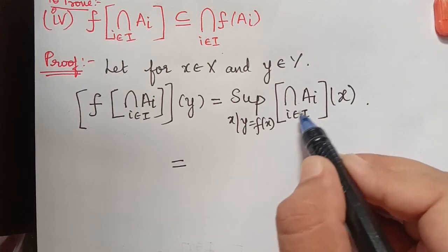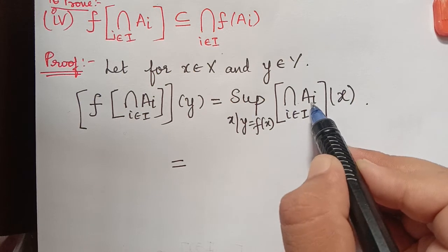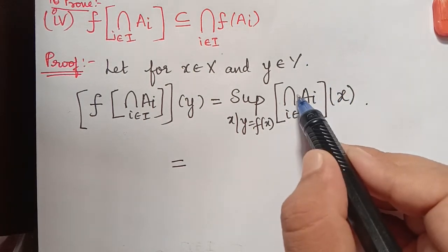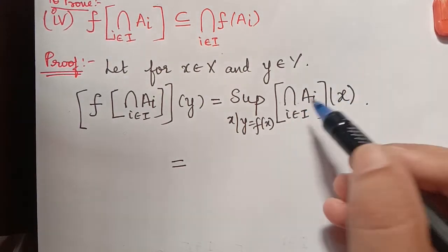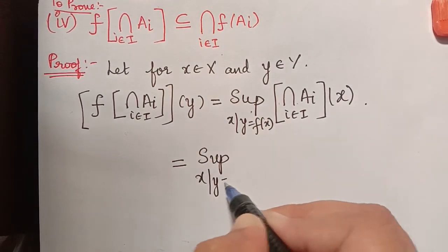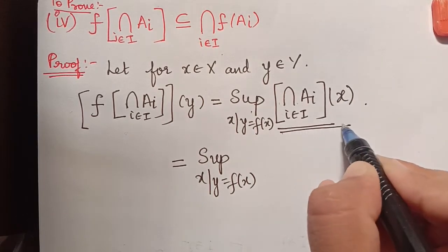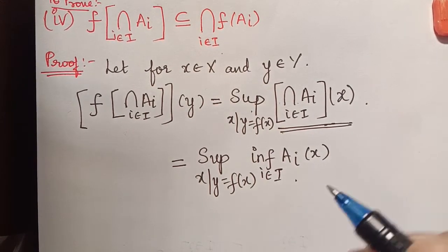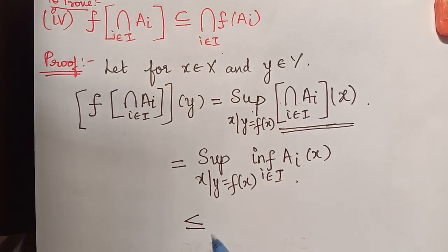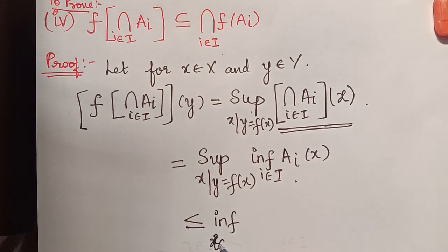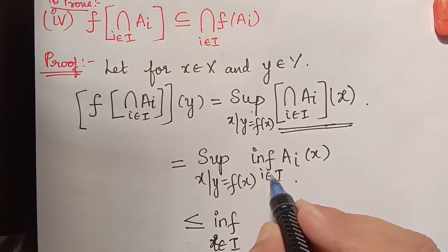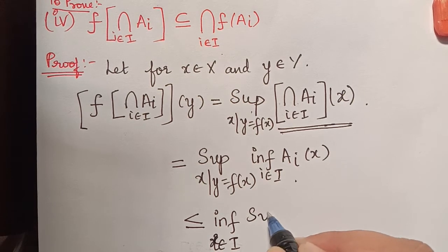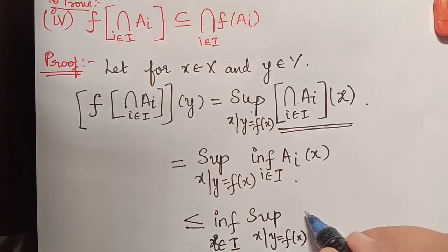We know that intersection of Ai for i an element of capital I — the intersection of many fuzzy sets — by the definition of fuzzy intersection equals the infimum of Ai of x. So this can be written as supremum over x such that y equals f of x of infimum of Ai of x for i an element of capital I. Now this is less than or equal to infimum over i an element of capital I of supremum over x such that y equals f of x of Ai of x, since we interchange the supremum and infimum.